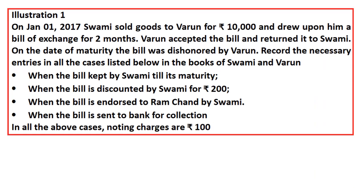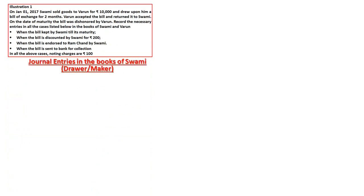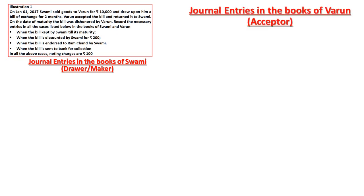Illustration: On January 1st, 2017, Swami sold goods to Varun for Rs. 10,000 and drew upon him a bill of exchange for two months. Varun accepted the bill and returned it to Swami. On the due date the bill was dishonored by Varun. Record the necessary journal entries in the books of Swami and Varun in all four situations — retained till maturity, discounted, endorsed, and sent to bank for collection. Noting charges are Rs. 100 in all cases.